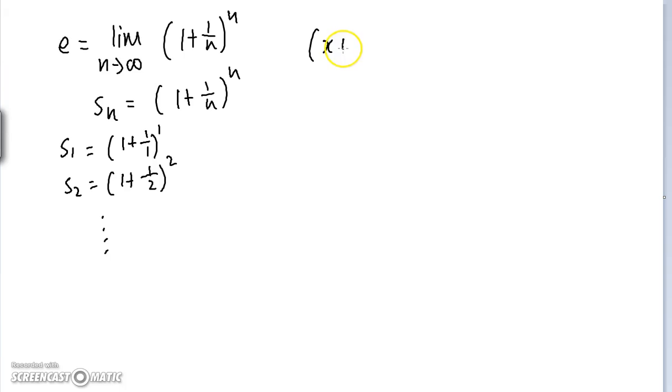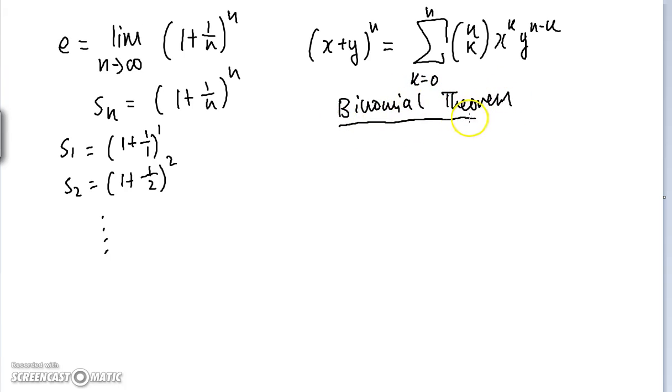What we're going to do is expand this sequence using the binomial theorem, which hopefully you know. Recall that X plus Y to the power N can be written as the sum of N choose K, X to the K, Y to the N minus K, from K equals 0 to N. This is just the binomial theorem. You notice immediately that 1 plus 1 over N is also in this binomial form. It has two terms and it's raised to a natural power.